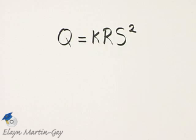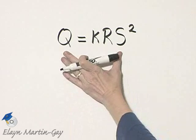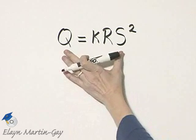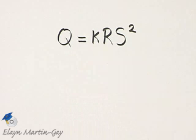Make sure you read and reread this problem. Notice we're given that Q is jointly proportional to R and the square of S. I've written that down.